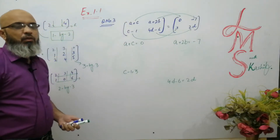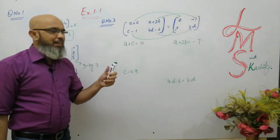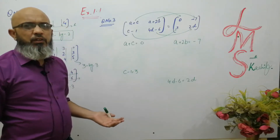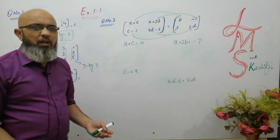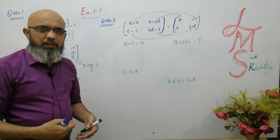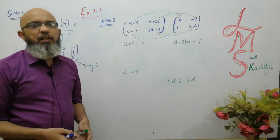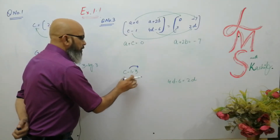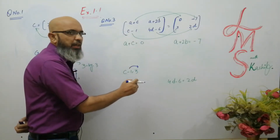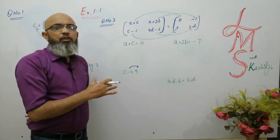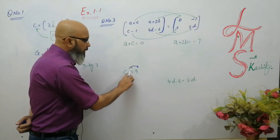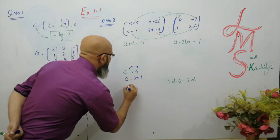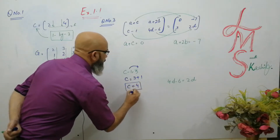Let's solve. From c − 1 = 3, we move −1 to the other side, so c = 3 + 1 = 4. We solved this one first because here we have two unknown variables; we must find the value of one first. For 4d − 6 = 2d, we collect variables on one side and constants on the other: 4d − 2d = 6, so 2d = 6, divide by 2, giving d = 3. Now we have c = 4; substituting into a + c = 0 gives a = −4. So the value of c is 4 and the value of d is 3 and the value of a is −4.